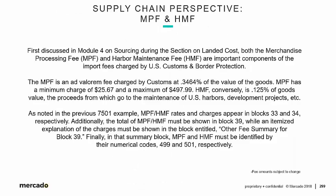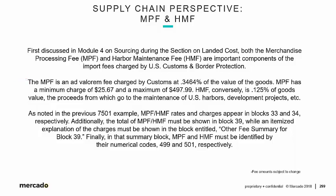Because we like to be thorough, let's talk a bit more from a supply chain perspective about MPF and HMF. First discussed in Module 4 on sourcing during the section on landed cost, both the merchandise processing fee and harbor maintenance fee are important components of the import fees charged by U.S. Customs and Border Protection, independent of any customs duties owed. The MPF is an ad valorem fee charged by customs at 0.3464% of the value of the goods. At the time of taping this section — because they can change — MPF has a minimum charge of $25.67 and a maximum of $497.99. HMF, which is only on ocean freight (hence the name harbor maintenance fee), is 0.125% of the goods value, and the proceeds go to the maintenance of U.S. harbors, development projects, etc.